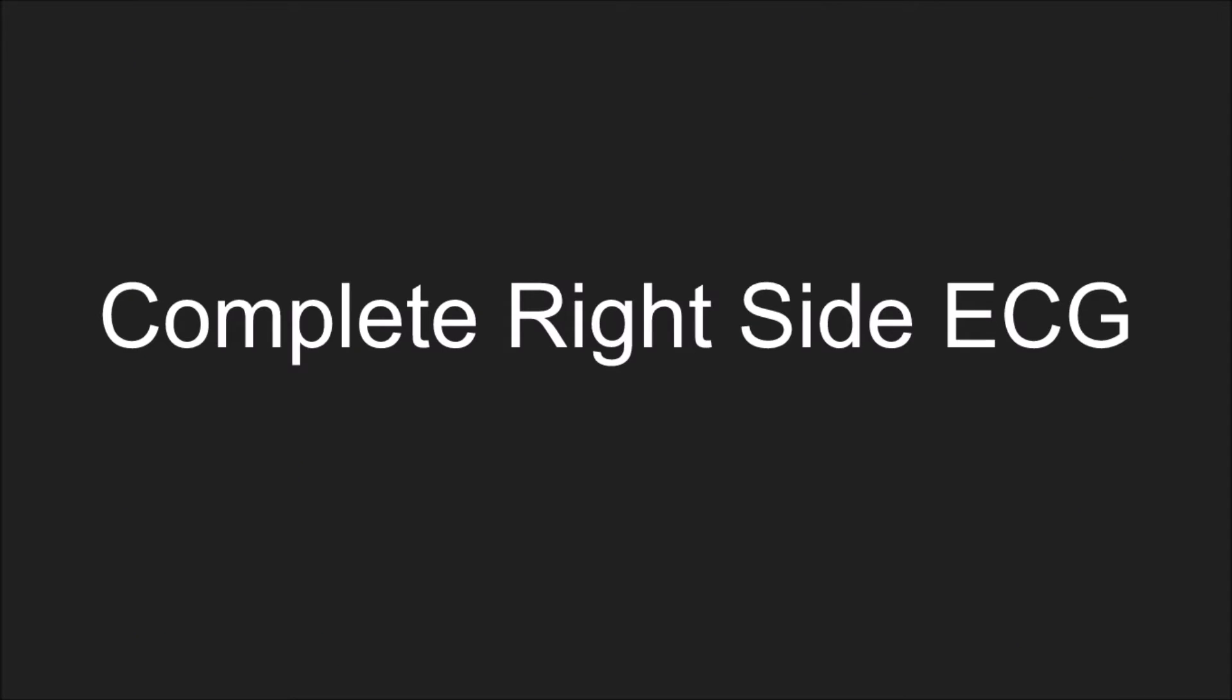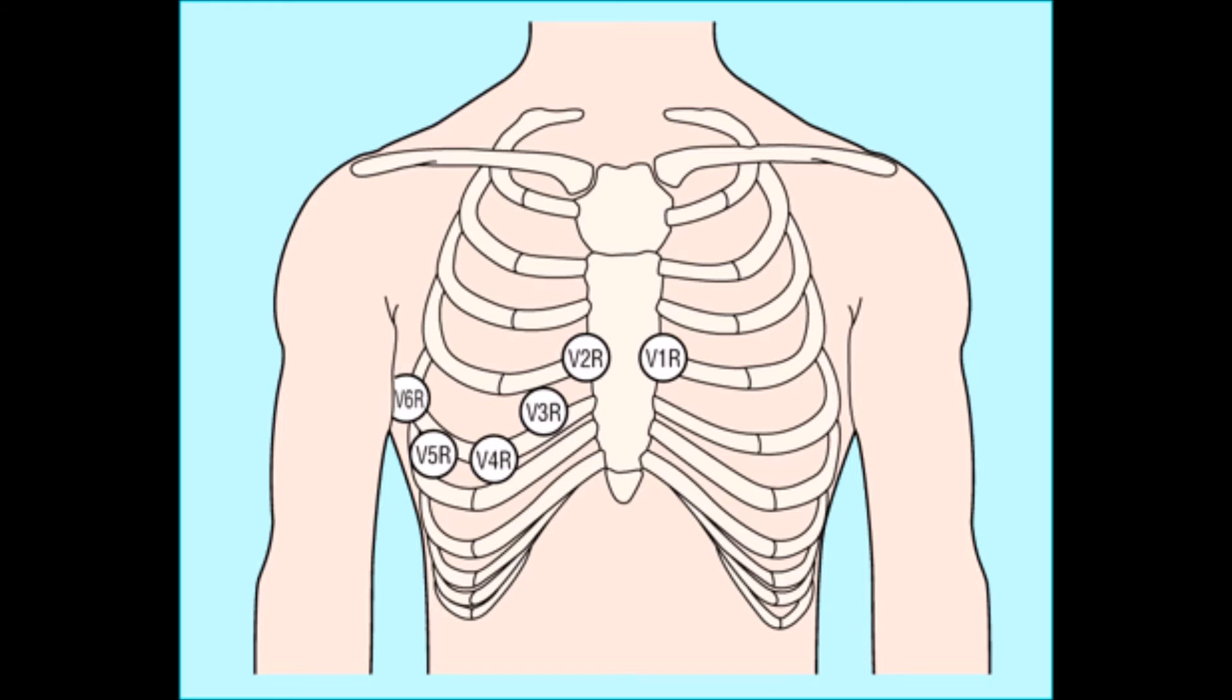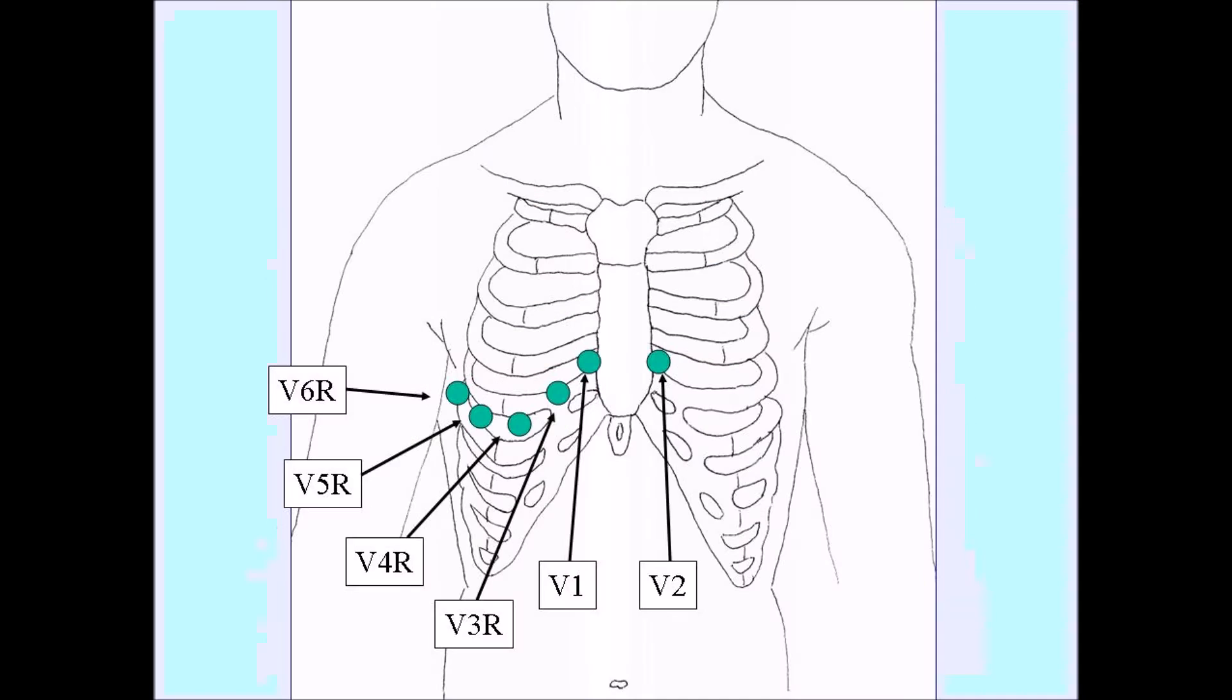So if you're one of those perfectionists who wants to capture a full right-sided ECG when you see an inferior wall MI, you can actually take, it burns a few more electrodes, but you can take a full right-sided ECG by doing nothing more than mirroring your electrodes down the patient's right side.